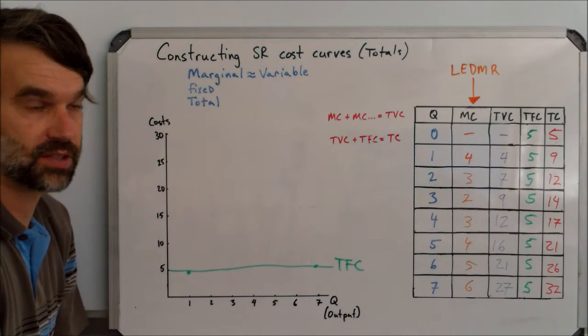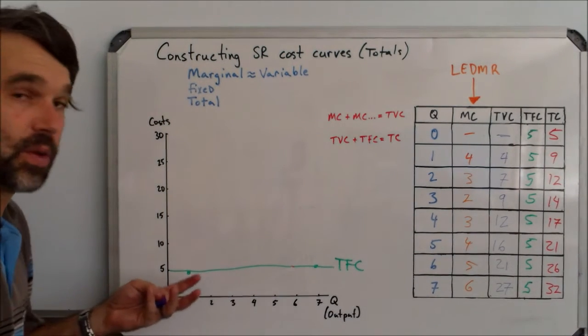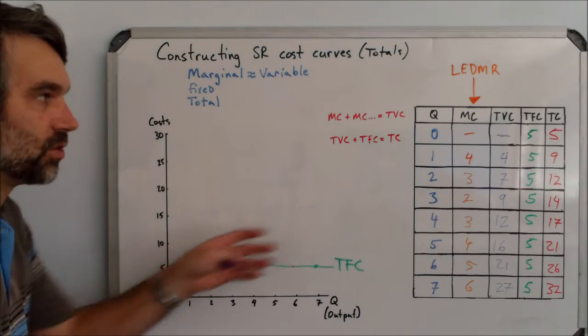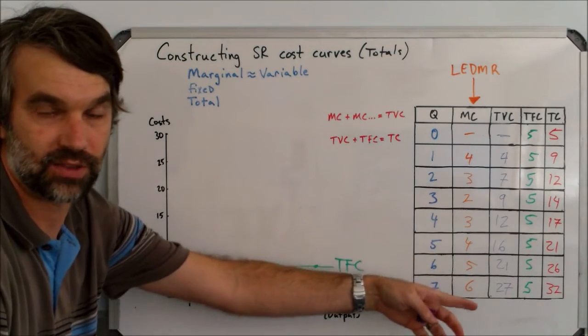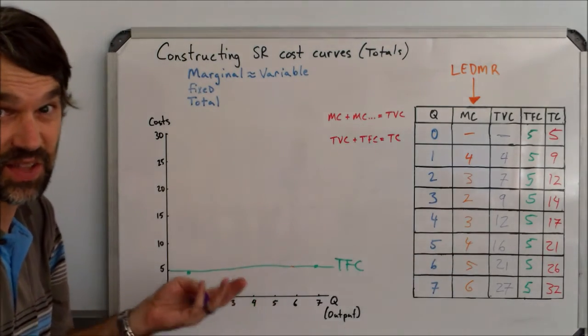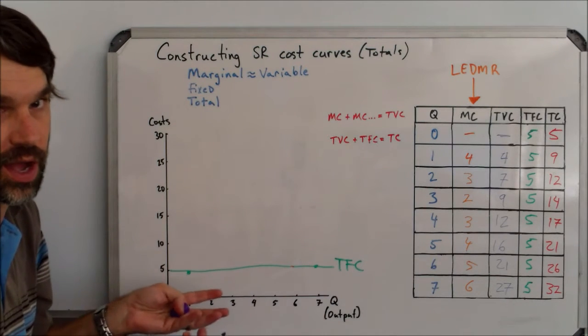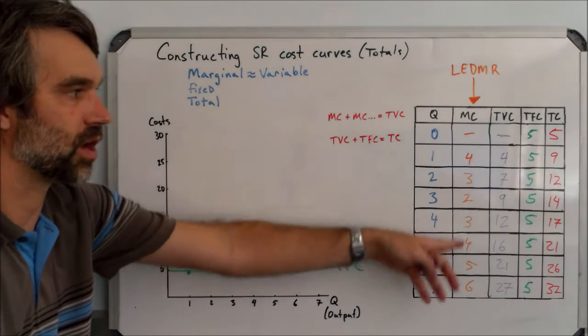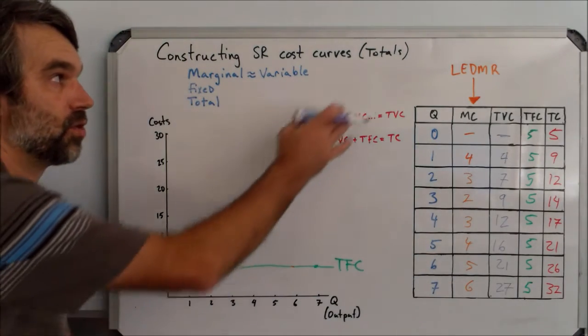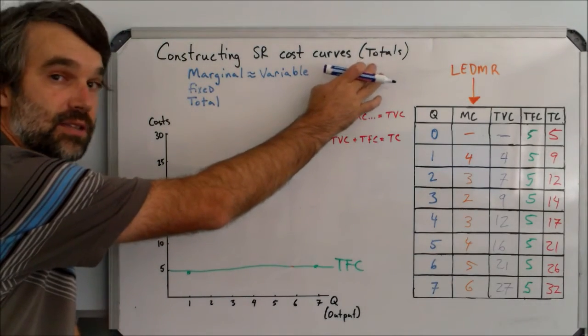Now let's graph the marginal costs. Typically, when we draw total cost curves, we don't do anything with marginal cost. To be honest, the reason is that there's not an important relationship between marginal cost and total cost. However, the marginal cost curve is very important when we draw average costs instead of total costs.